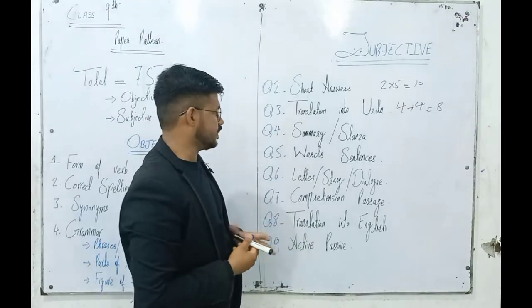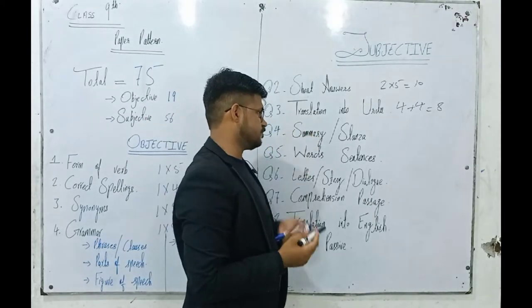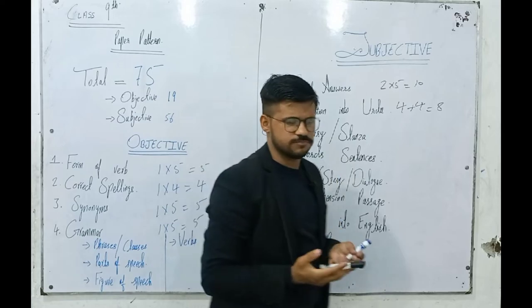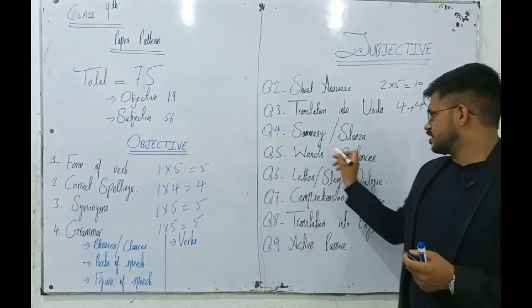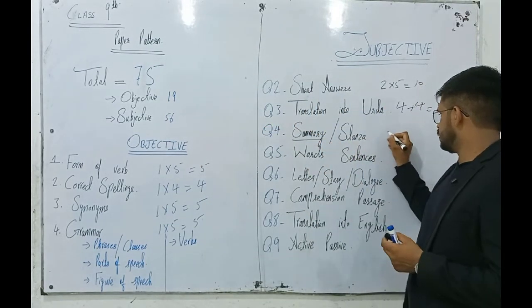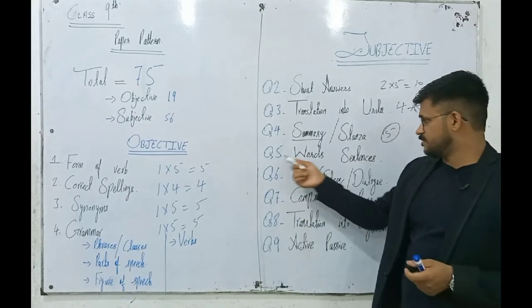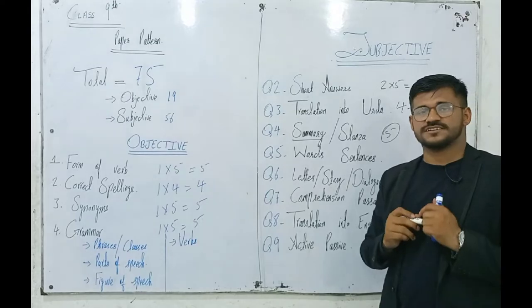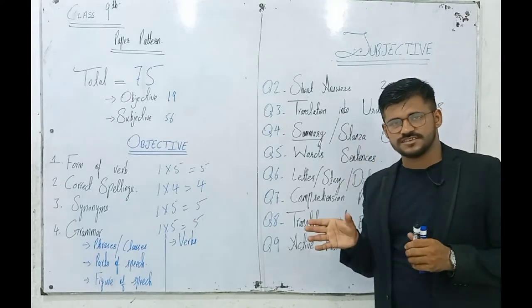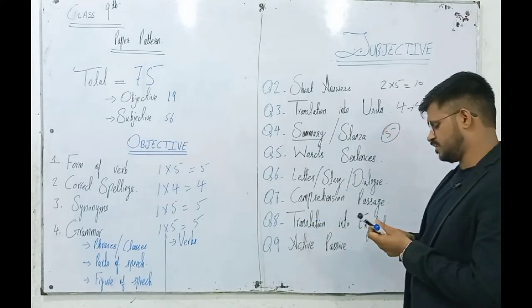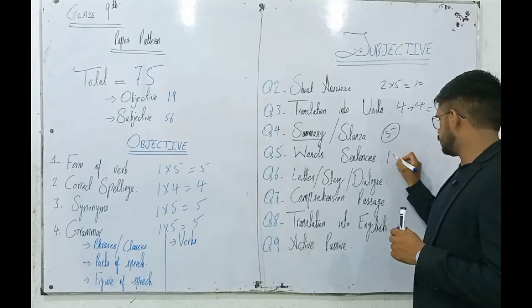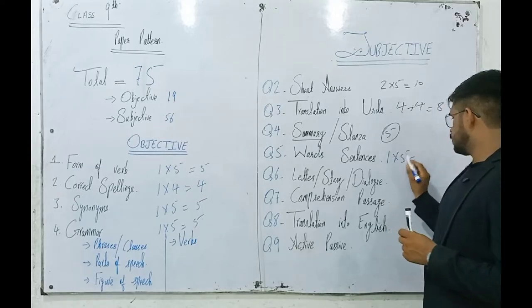Next, we have summary or stanza. We can attempt either, but mostly students attempt summary. This is 5 marks. Next, question number 5, words and sentences. We make sentences. This is also 1 multiplied by 5, total 5 marks.